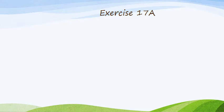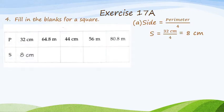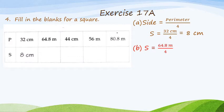Now let's move to question number 4: Fill in the blanks for a square. A box is given in which the perimeter of the square is given and you have to find out the side of the square. We know that side is equal to perimeter divided by 4. In part A, perimeter is 32 cm, so side equals 32 divided by 4, which is 8 cm. In part B, perimeter is 64.8 m, so side equals 64.8 divided by 4, which is equal to 16.2 m.